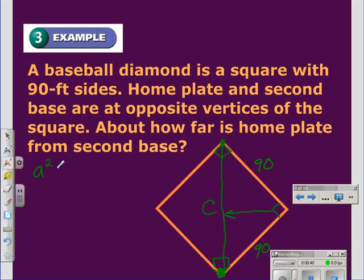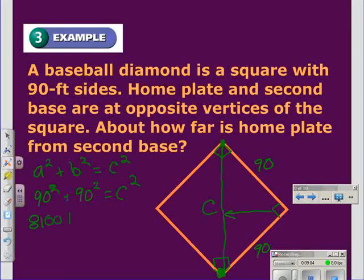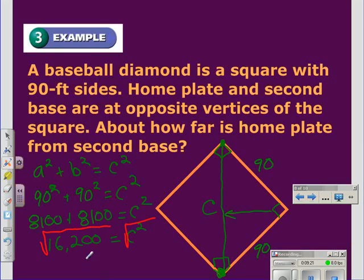Write down the Pythagorean theorem. A squared plus B squared is equal to C squared. And the necessary substitutions. We will have 90 squared plus 90 squared is equal to C squared. 90 squared is 8,100. So we have 8,100 plus 8,100 is equal to C squared. That will give us 16,200 is equal to C squared. And taking the square root of each side will give us the length of C or the distance from home plate to second base. And C is equal to approximately 127 feet.